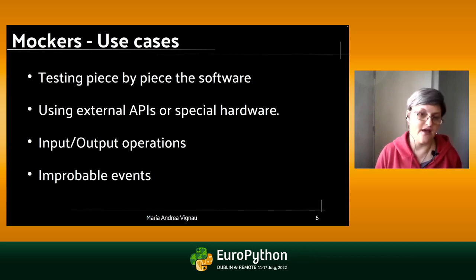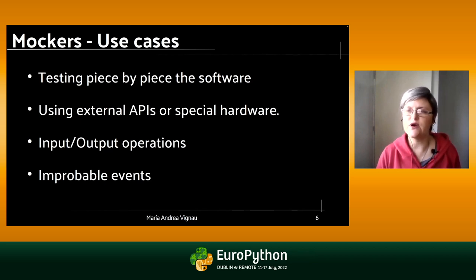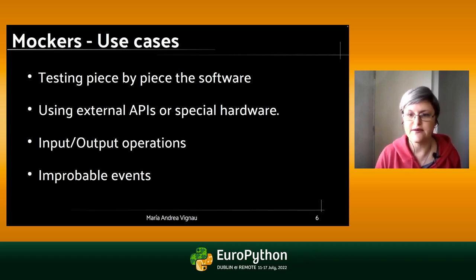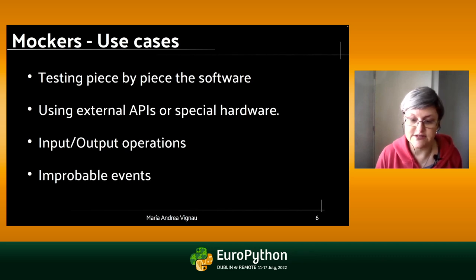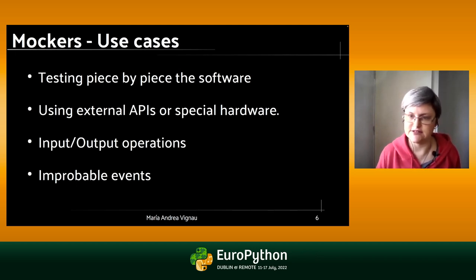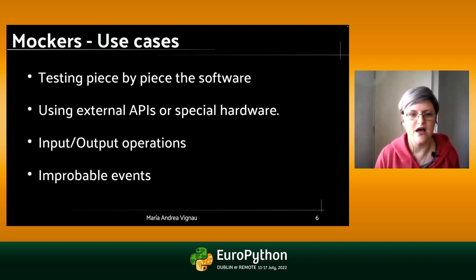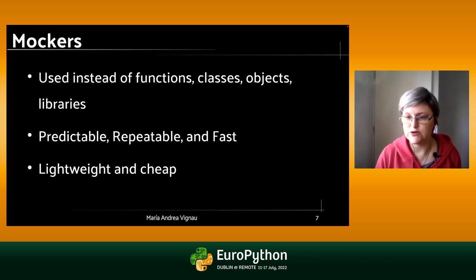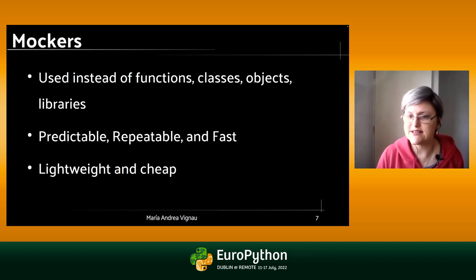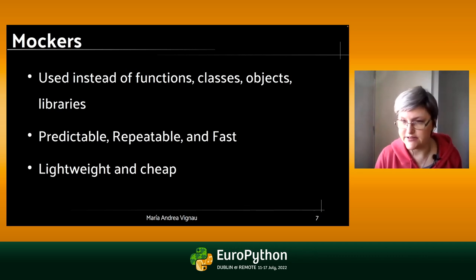One important case to use mocking is in input-output operations that are usually costly, and when you have some improbable events. For example, when you want to test input-output in a file system and you want to test how your system works when the file system is full — you are not going to fill a hard disk just to try this. You want some way to simulate this kind of event. You can use mockers or fakers: fake objects to simulate functions, classes, objects, or even complete libraries.